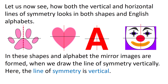Children, let us now see what are vertical and horizontal lines of symmetry and how they look in both shapes and English alphabets. Let us see the vertical line of symmetry. You can see four pictures where the line of symmetry is drawn vertically in red color. The line of symmetry is always drawn using a dotted line because it is an imaginary line. A symmetry means it should divide the picture into two equal halves — when we fold the picture along the dotted line, the left side should cover the right side. When we draw the line vertically, it forms a line of symmetry.